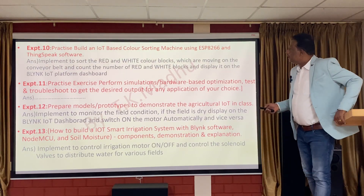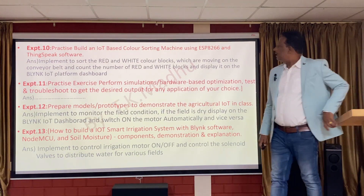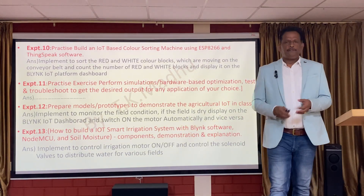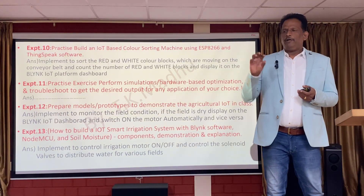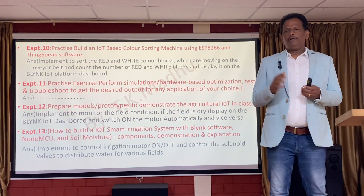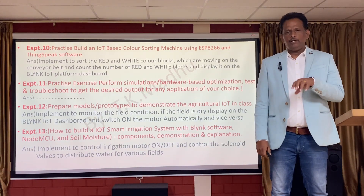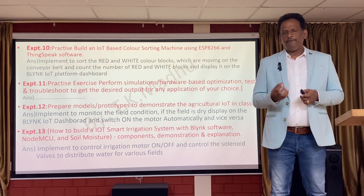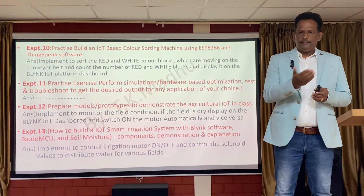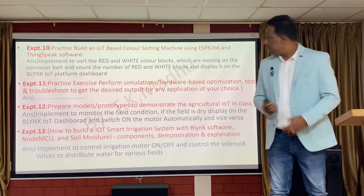The 10th experiment: build an IoT-based color sorting machine using ESP8266 and ThingSpeak software. We can use a small conveyor belt and pass colored blocks — red, green, yellow, whatever. As the conveyor belt moves, with the help of a color sensor, we identify each block. If red color comes, it moves to one box; if green comes, to another; and other colors go straight on the conveyor belt and fall in a different box.